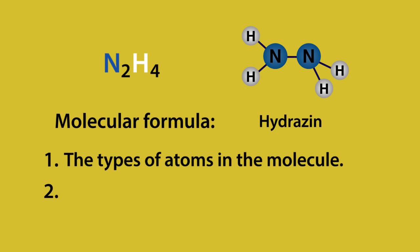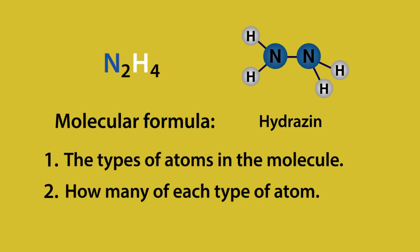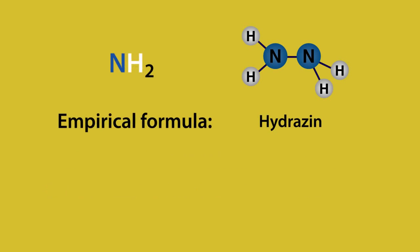And two, how many of each type of atom. In this case, there are two nitrogen atoms and four hydrogen atoms. The empirical formula of a compound also tells us two things.